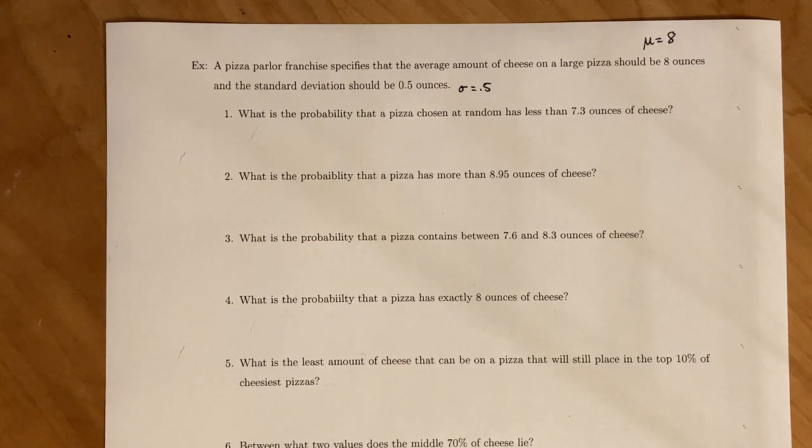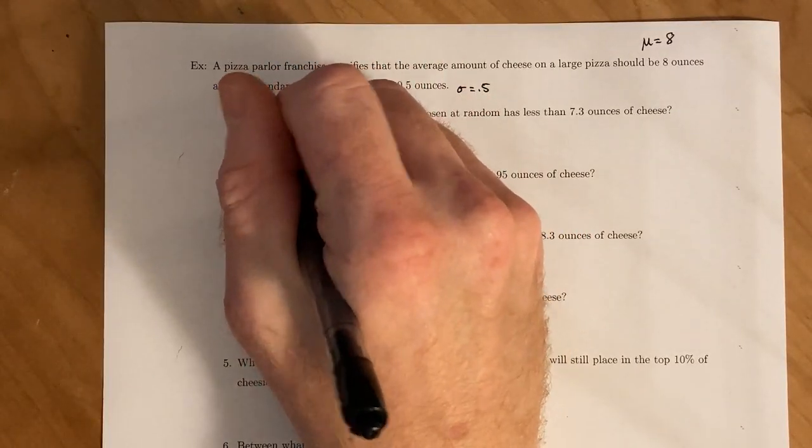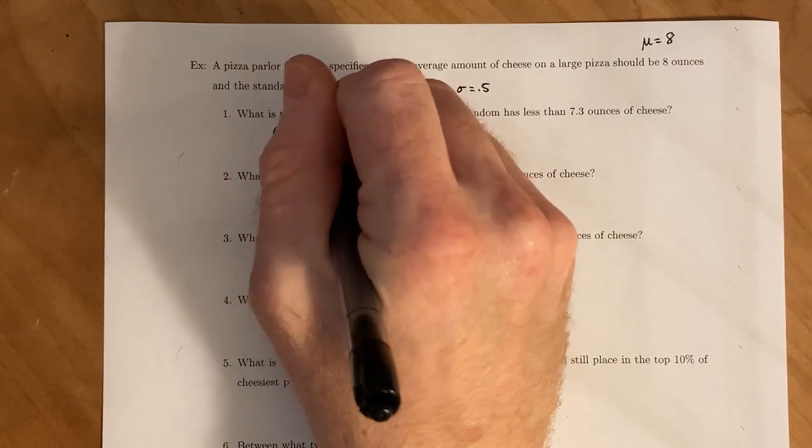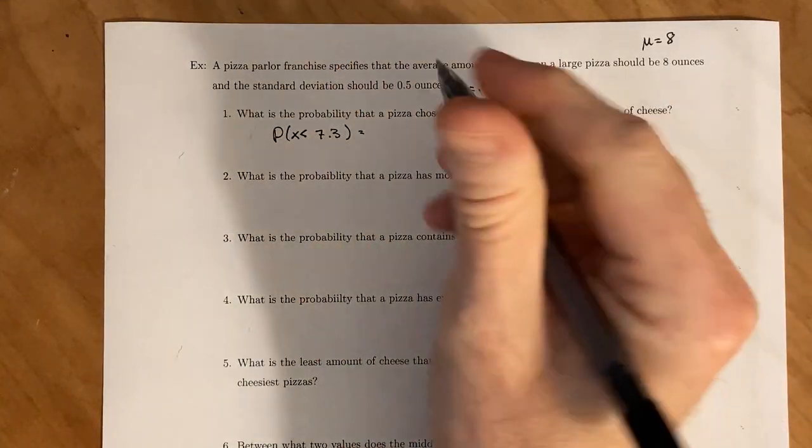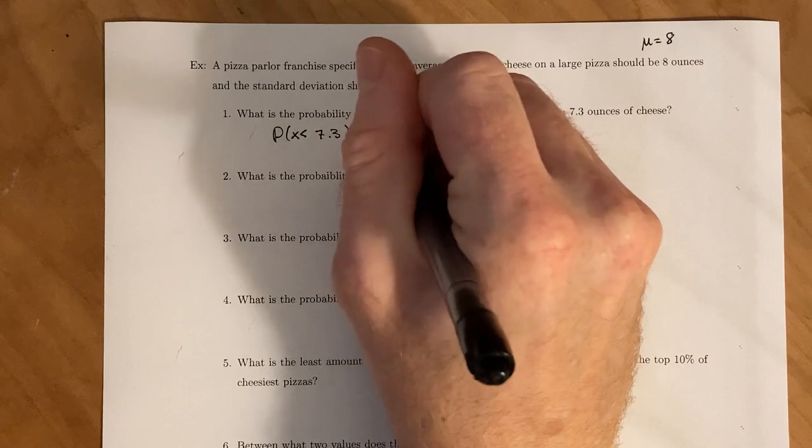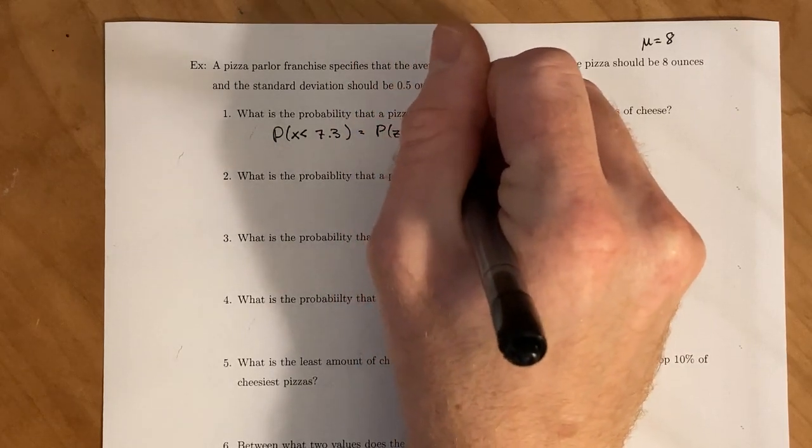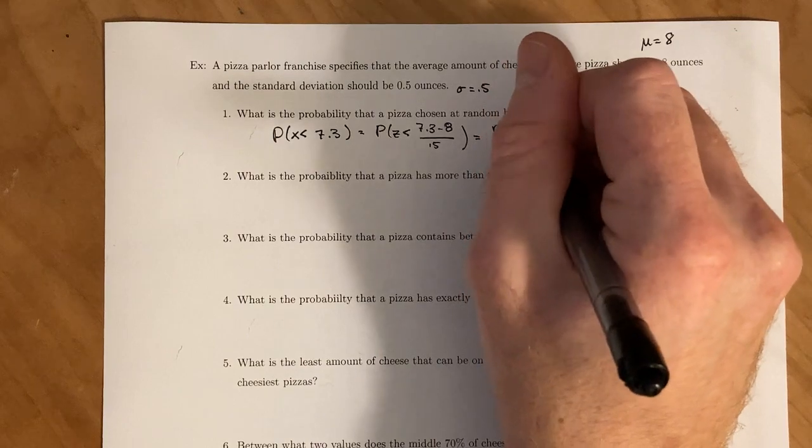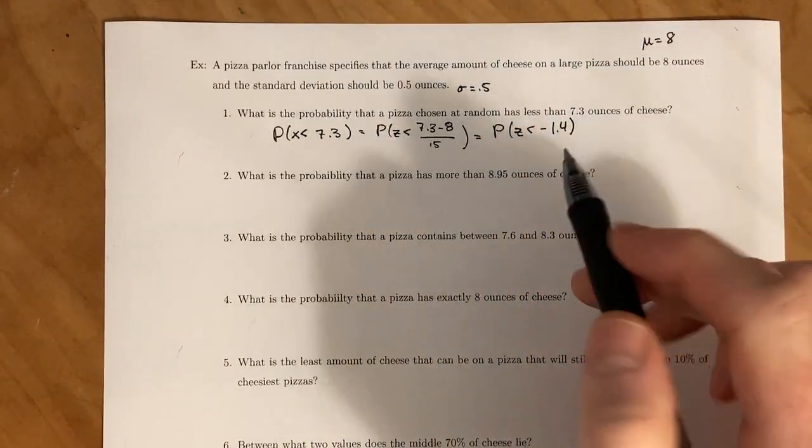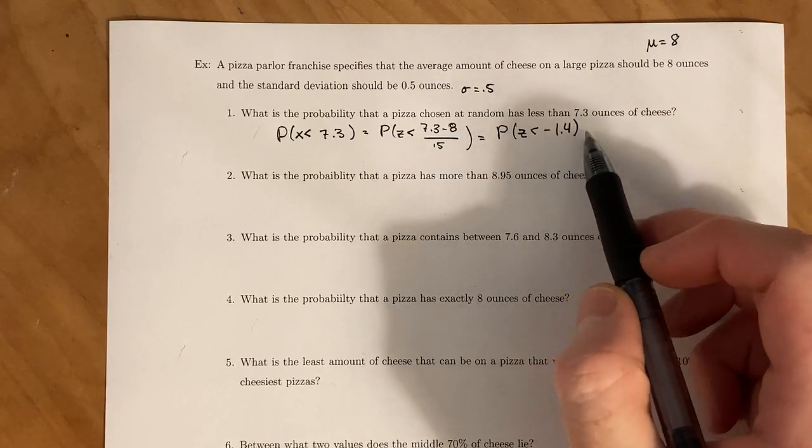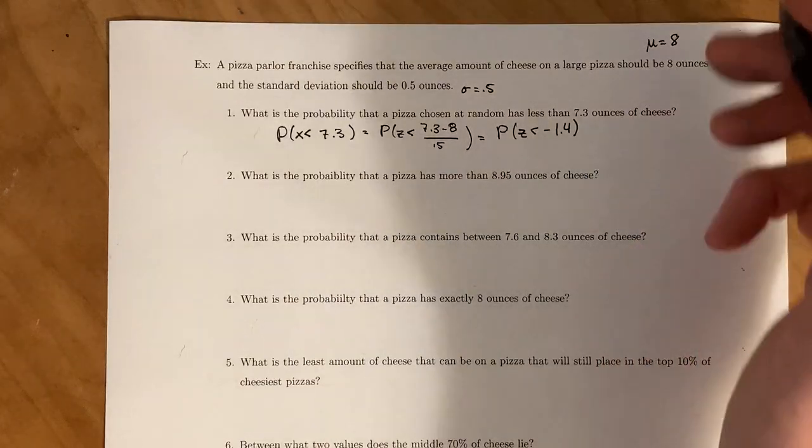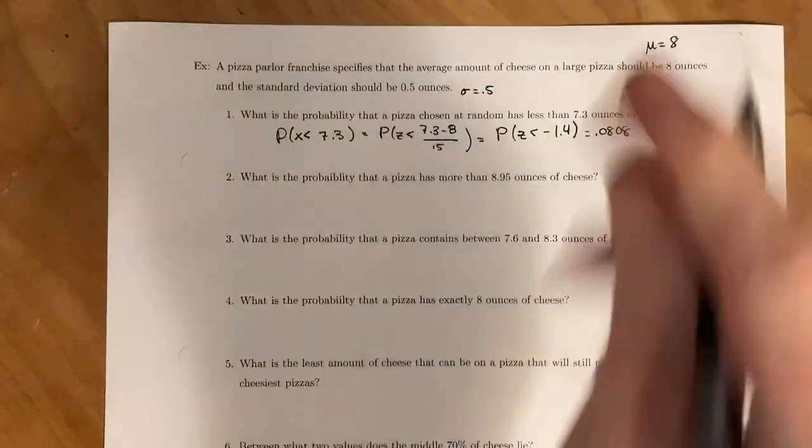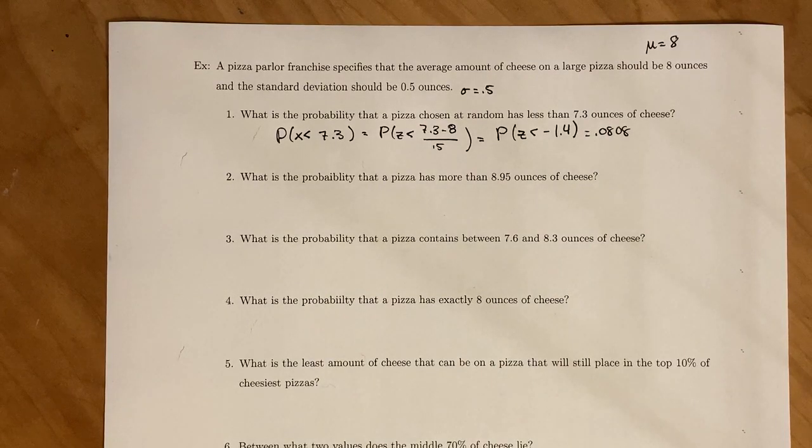We want to find the probability that a pizza chosen at random has less than 7.3 ounces of cheese. So we take the probability that x is less than 7.3, which we take our x-score and turn it into a z-score. The value minus the mean over the standard deviation. Once we calculate that, we get z is less than negative 1.4. If you go to your chart for negative 1.4 and then the column that's 0.0, this gives us 0.0808. So having a large pizza with less than 7.3 ounces of cheese happens about 8% of the time.